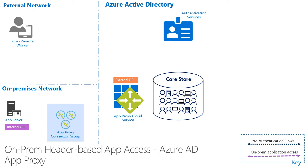To set the stage, we have Kim, who will access PeopleSoft, which sits on the core network and uses header-based authentication. The PeopleSoft app has already been onboarded with Azure AD App Proxy for pre-authentication, which is covered in more depth in the App Proxy fundamentals video. With pre-authentication, users will be asked to authenticate before accessing the app, so that only authenticated traffic reaches the on-premises server.